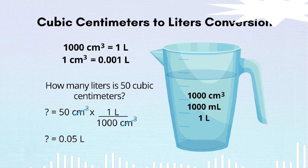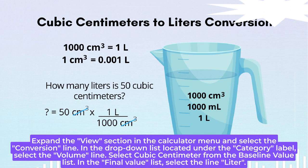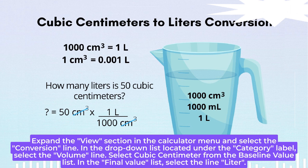Step 4. Expand the View section in the calculator menu and select the conversion line. In the drop-down list located under the category label, select the volume line. Select cubic centimeter from the baseline value list. In the final value list, select the liter line.